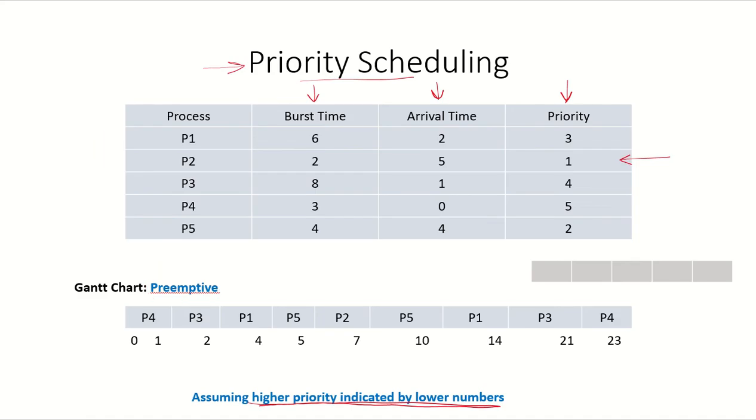Now let's start working out this example. At time 0, we just have one process in the system which is P4. So P4 will be allocated the CPU.